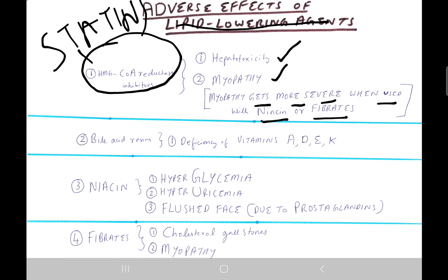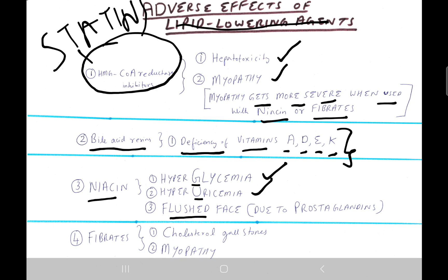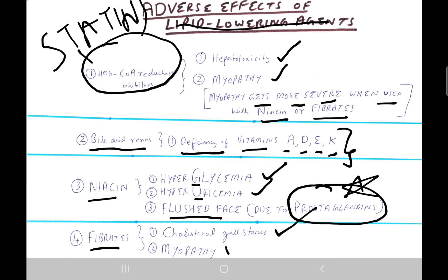Side effects of bile acid resins are deficiency of vitamins A, D, E, and K — these are fat-soluble vitamins. Side effects of niacin are hyperglycemia, hyperuricemia, and flushed face; flushed face is due to prostaglandins — very important. Side effects of fibrates are cholesterol gallstones and myopathy.